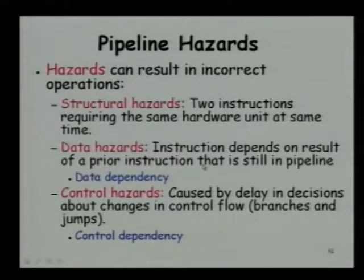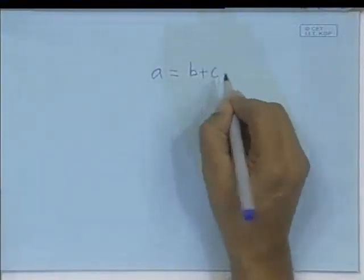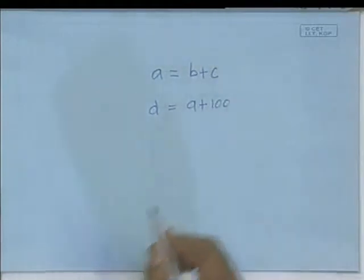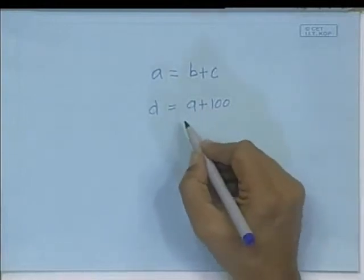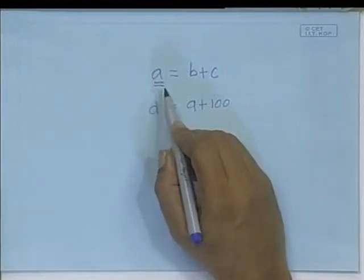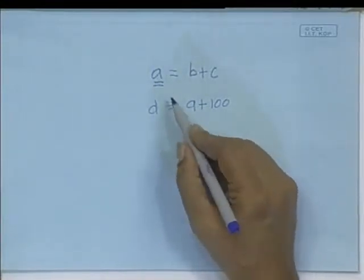For example, if we have a value 'a' that is being computed by one instruction and 'a' is being used by another instruction — say, a = b + c and d = a + 100 — there is a dependency here. This second instruction has the operands 'a' and 100, and until the first instruction produces 'a', the second instruction cannot start executing. So this is an example of a data dependency.